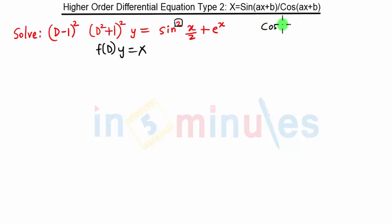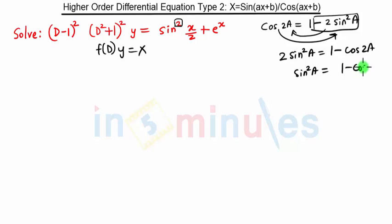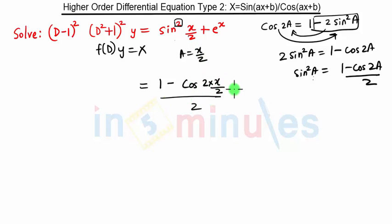So here, what we are going to do is substitute using cos(2a). We know the formula: cos(2a) = 1 − 2sin²(a). So it becomes 2sin²(a) = 1 − cos(2a), and sin²(a) = (1 − cos(2a)) / 2. In our equation, a = x/2, so we apply the same formula: sin²(x/2) = (1 − cos(2 · x/2)) / 2.